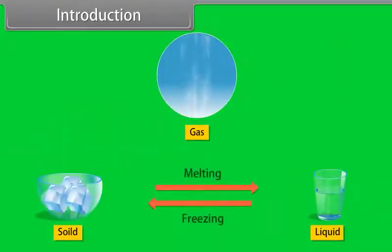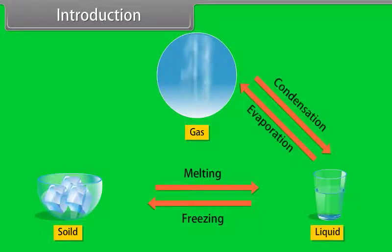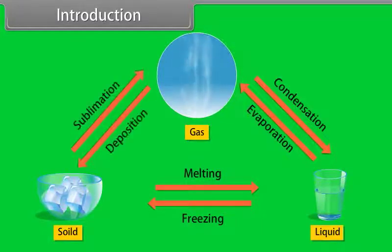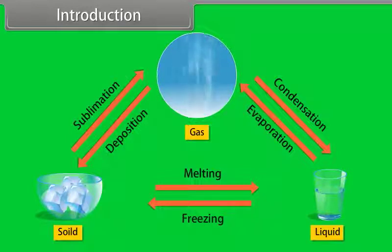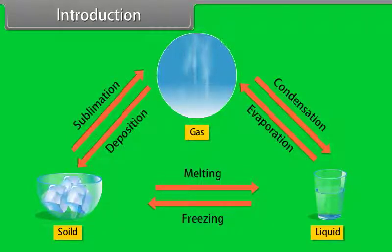Equilibria can exist between solid and liquid, liquid and gas, or solid and gas phases. In homogeneous equilibria, the reactants and the products are in the same phase, whereas in heterogeneous equilibria, the reactants and the products are in different phases.